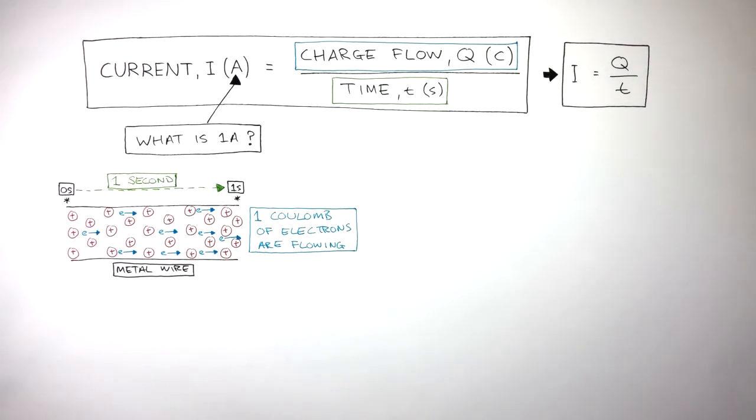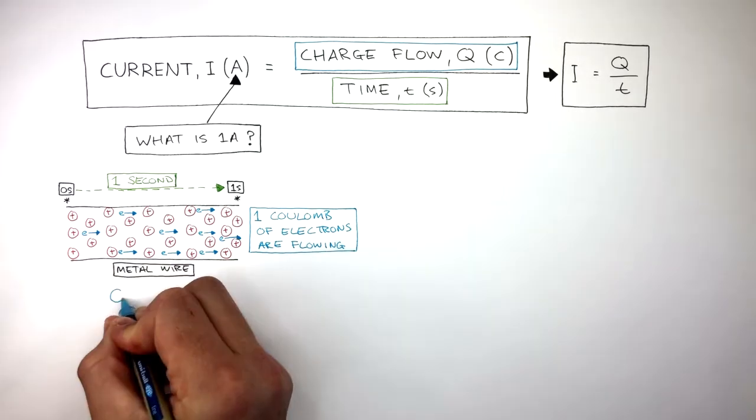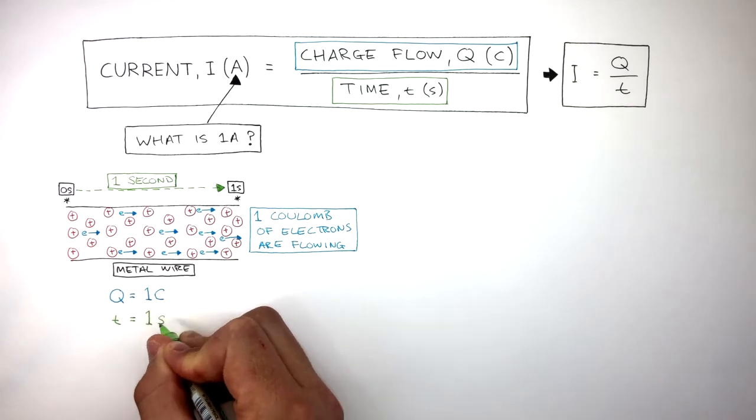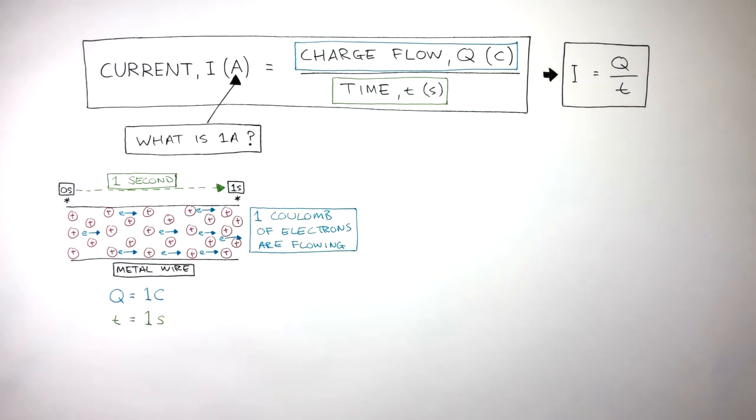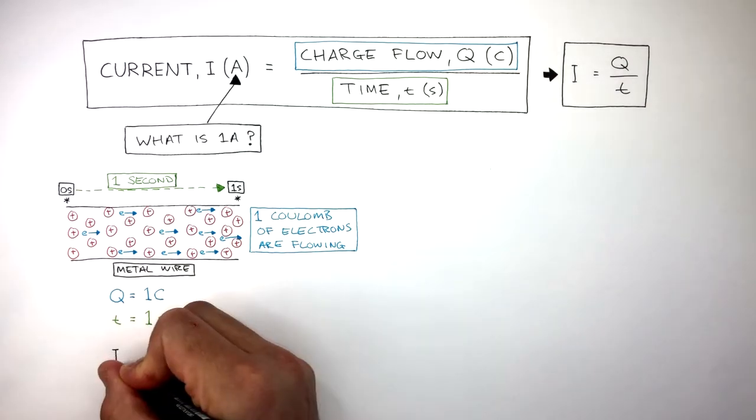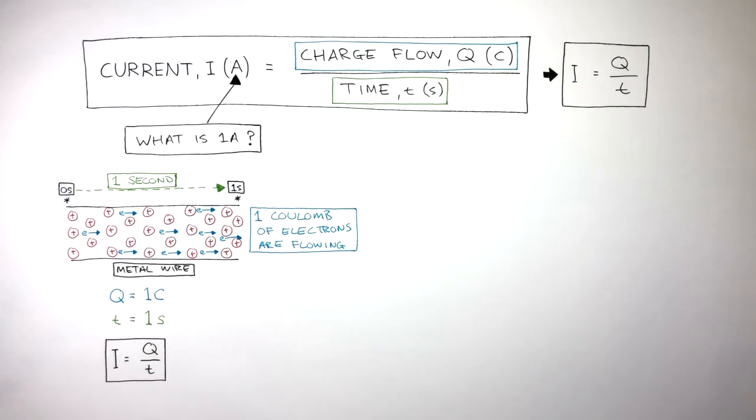Let's now lay out the data so we know what to calculate. Q equals 1 Coulomb, T equals 1 second. The equation is I equals Q over T. So we write I equals Q over T underneath our data.